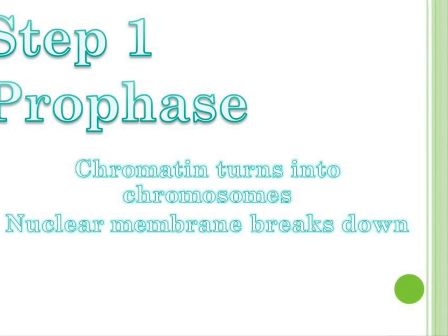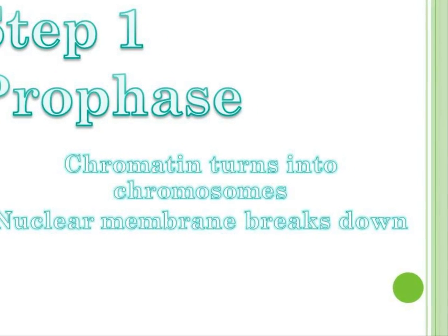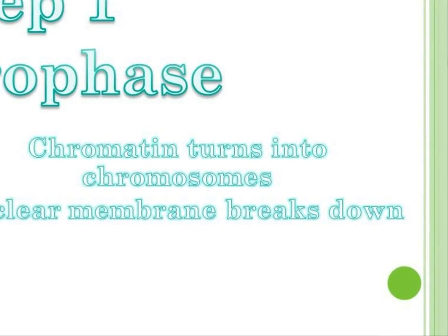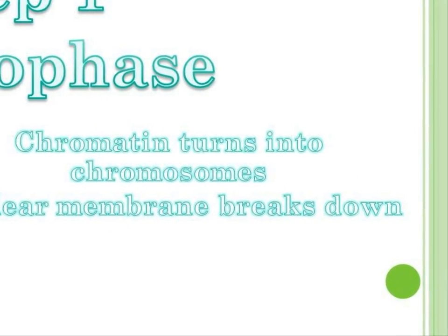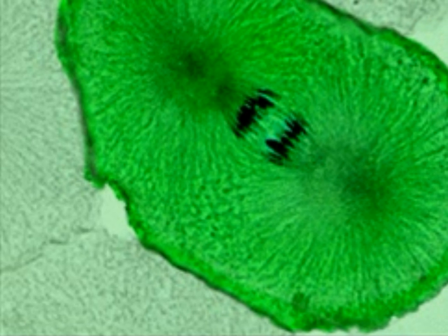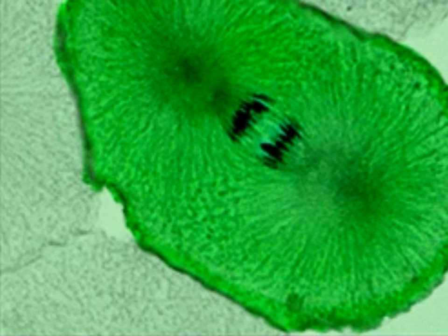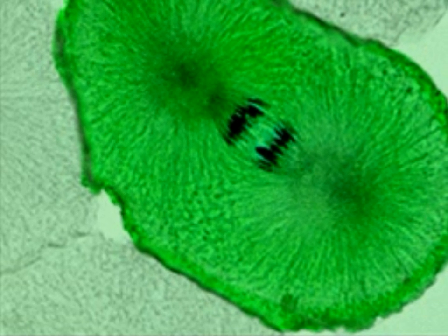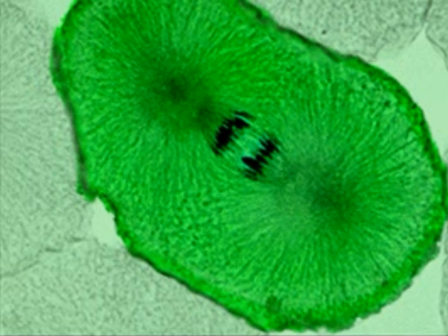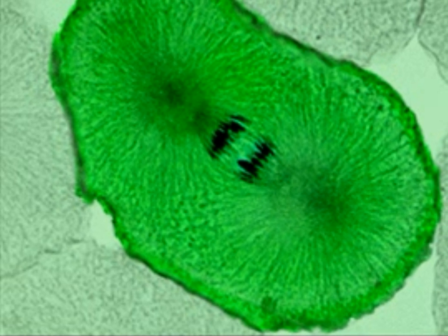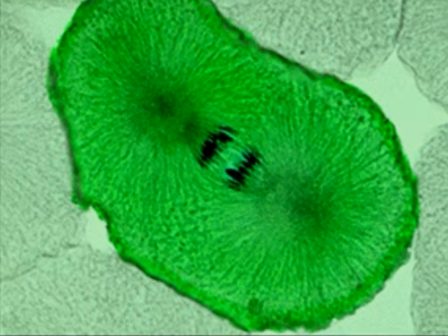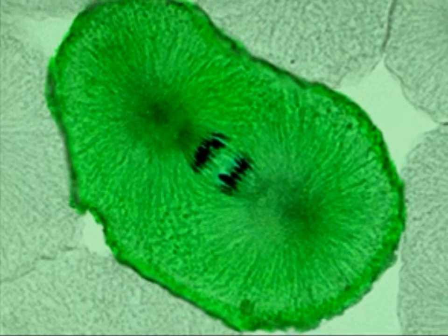Chromosomes become visible, centrioles separate, and take up positions on opposite sides attached to the fibers in the spindle. At the end, chromosomes coil more tightly, the nucleolus disappears, and the nuclear envelope breaks down. In this picture, you can see that happening in the center of the cell.